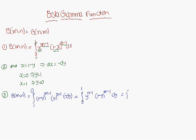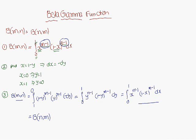So that gives us the integral from 0 to 1 of y^(n-1) into (1 minus y)^(m-1) dy. In general, in terms of x, this is the integral from 0 to 1 of x^(n-1) into (1 minus x)^(m-1) dx. So Beta(m, n) equals the integral from 0 to 1 of x^(n-1) (1 minus x)^(m-1) dx, which is nothing but Beta(n, m). Therefore, Beta(m, n) is equal to Beta(n, m).